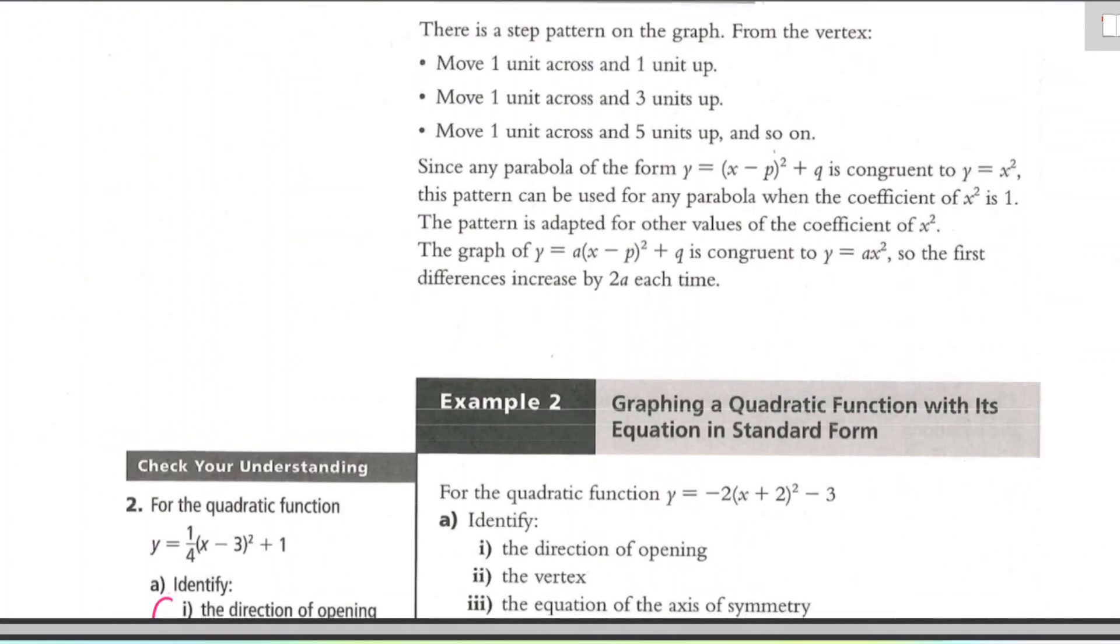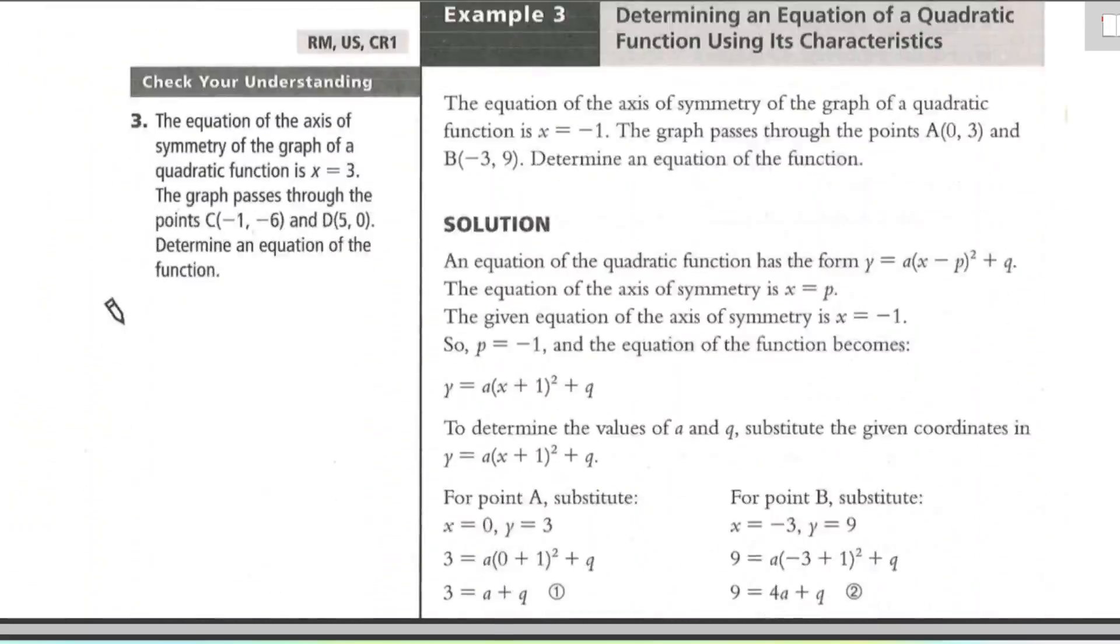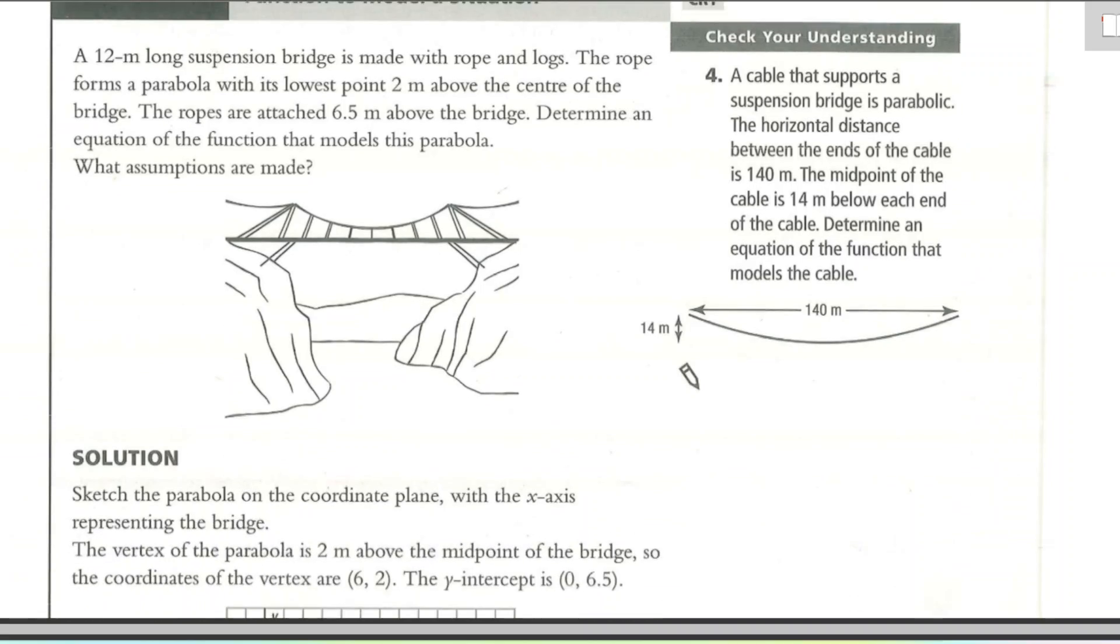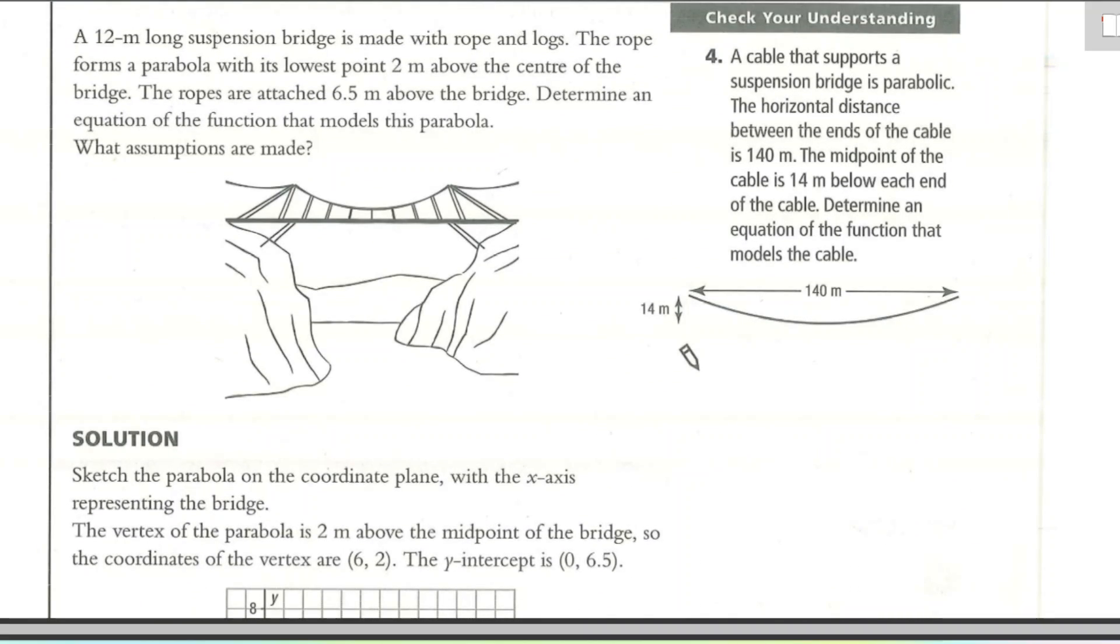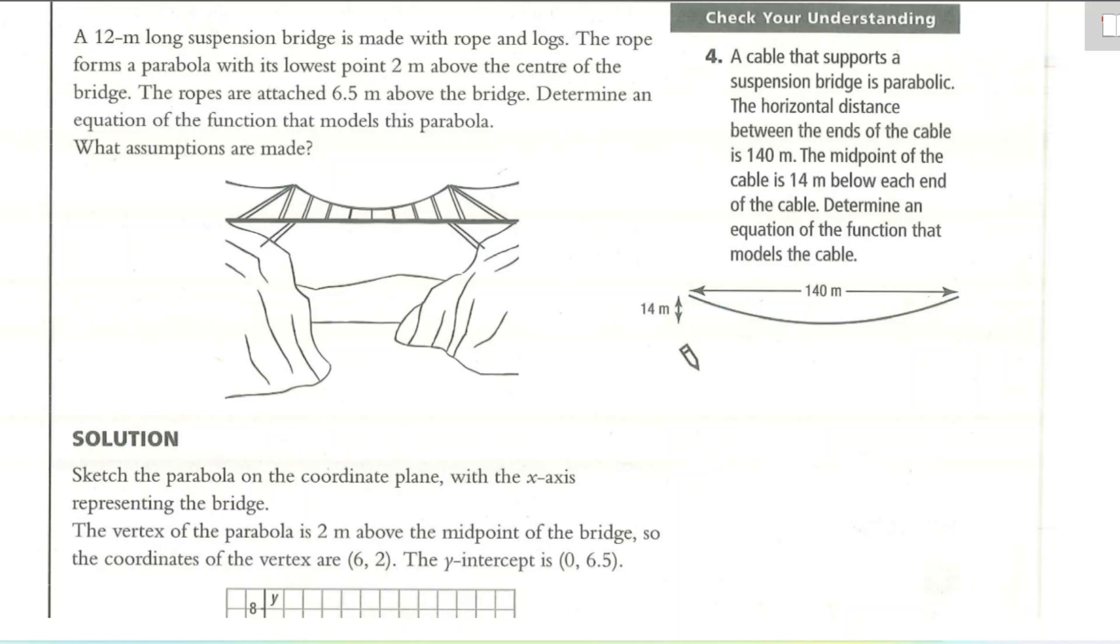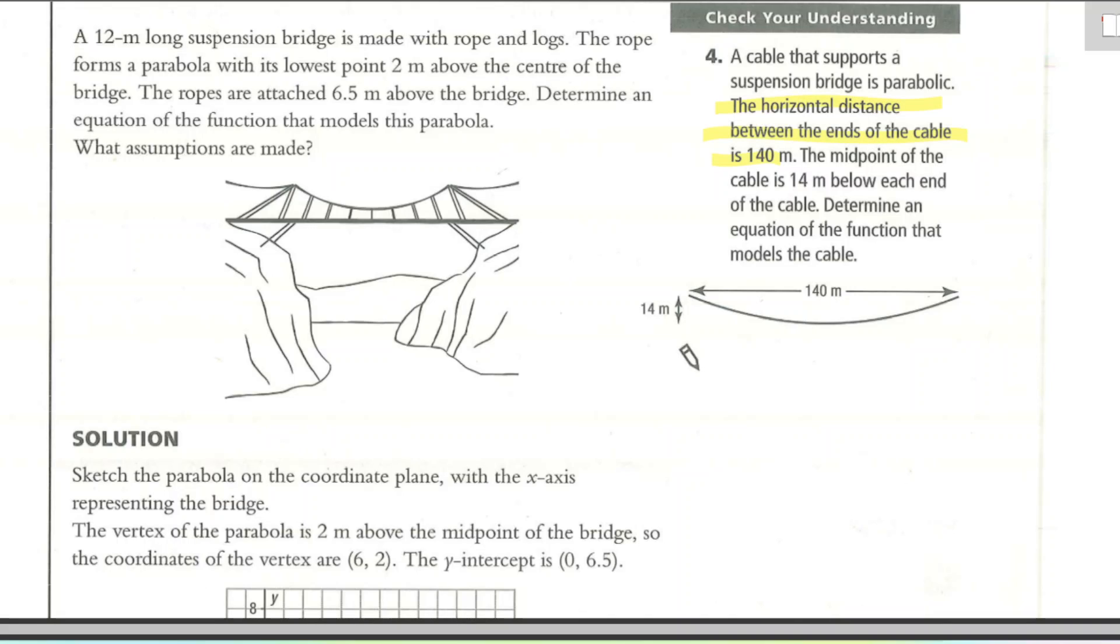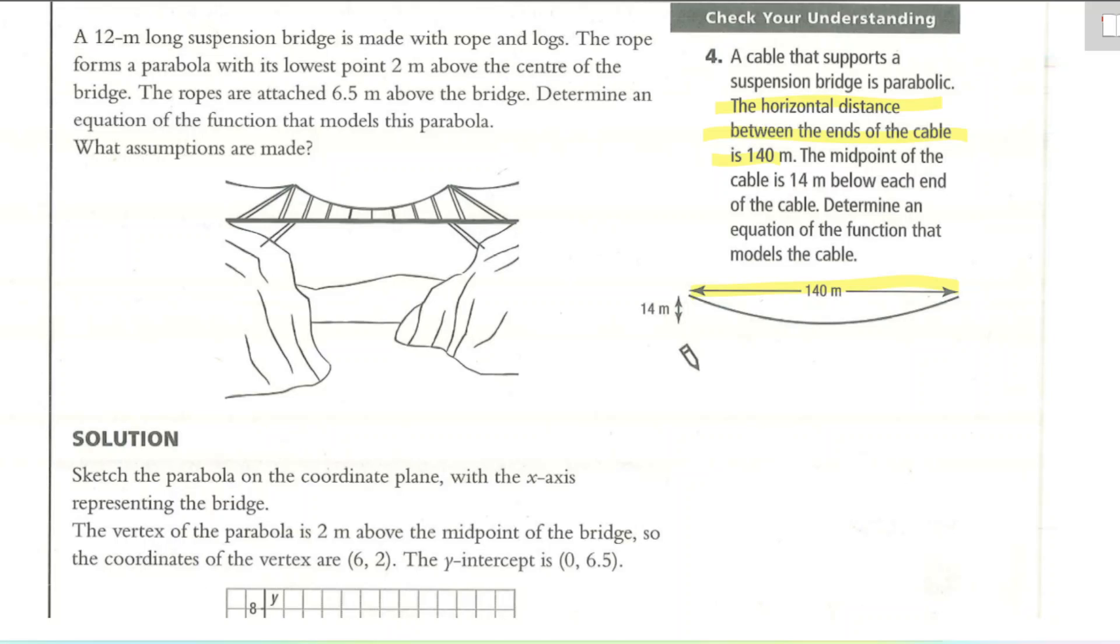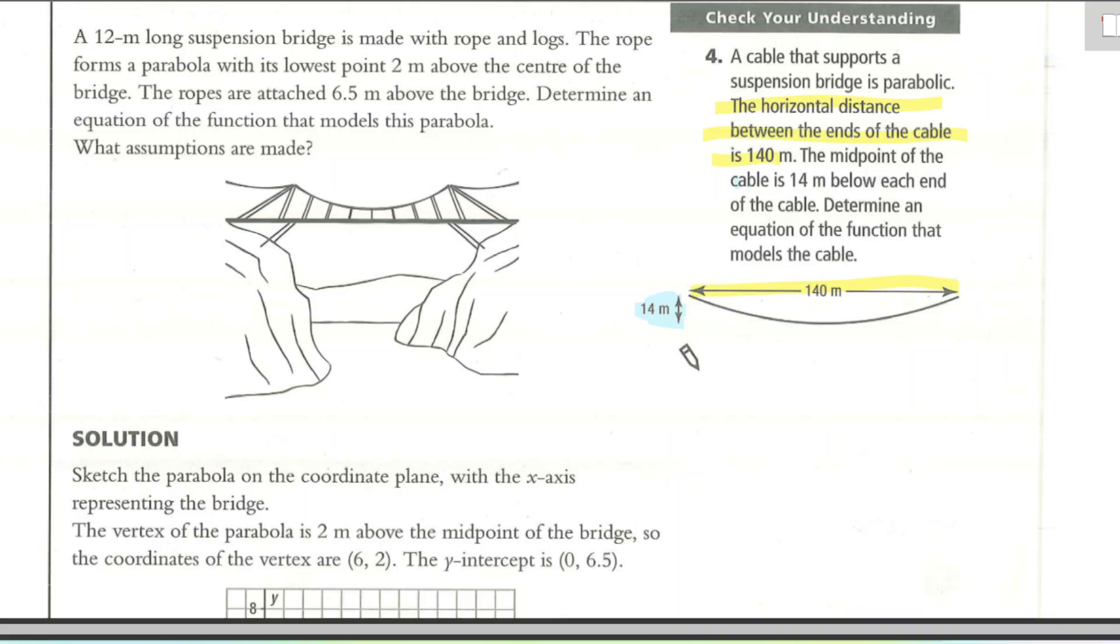Let's go into the last example, which is a word problem. We're going to skip example 3, actually. Let's go right to example 4. Now, in this example, we are modeling a real-life object using a parabola and putting it onto a coordinate grid and making an equation for it. So you can pause the video here and read the example yourself, or you could read it along with me. So the cable that supports a suspension bridge is parabolic. That means it has a parabola shape to it. The horizontal distance between the ends of the cable is 140. So this distance here is 140. The midpoint of the cable is 14 meters below each end.